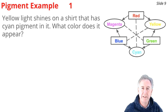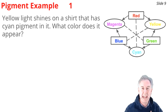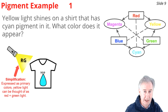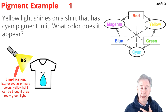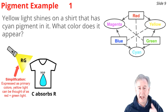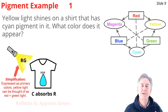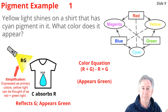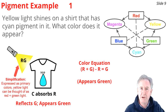Example one: yellow light shines on a shirt with cyan pigment. Yellow light is simply red + green. The cyan pigment absorbs red, so red is subtracted, and green reflects to your eye — the shirt looks green. Color equation: (R + G) − R = G. The shirt appears green.